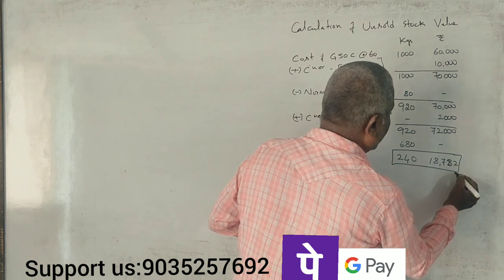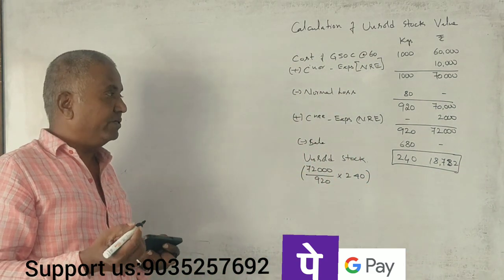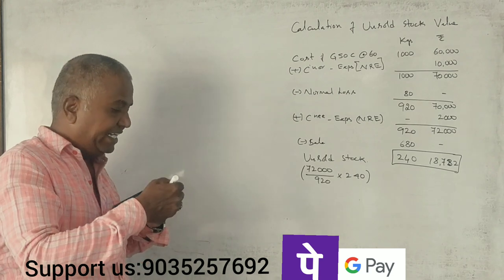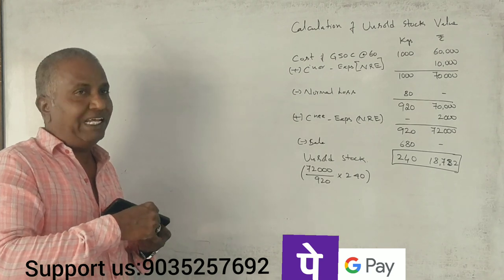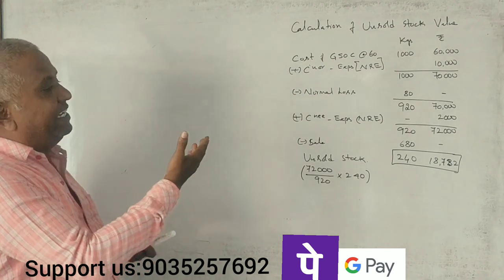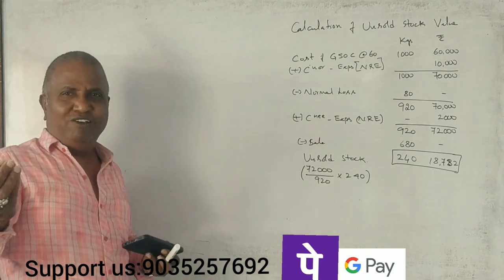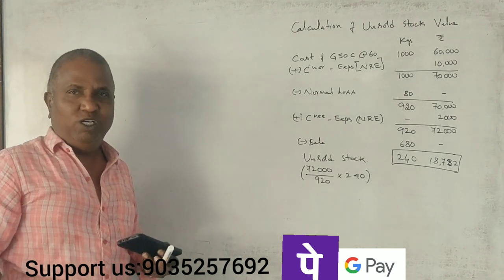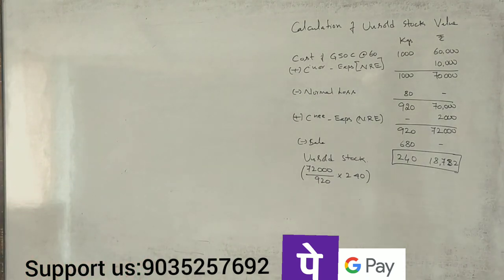So the unsold stock is 240 units valued at Rs. 18,782. This is how we solve the unsold stock question for 5 marks from the 2019 exam paper.